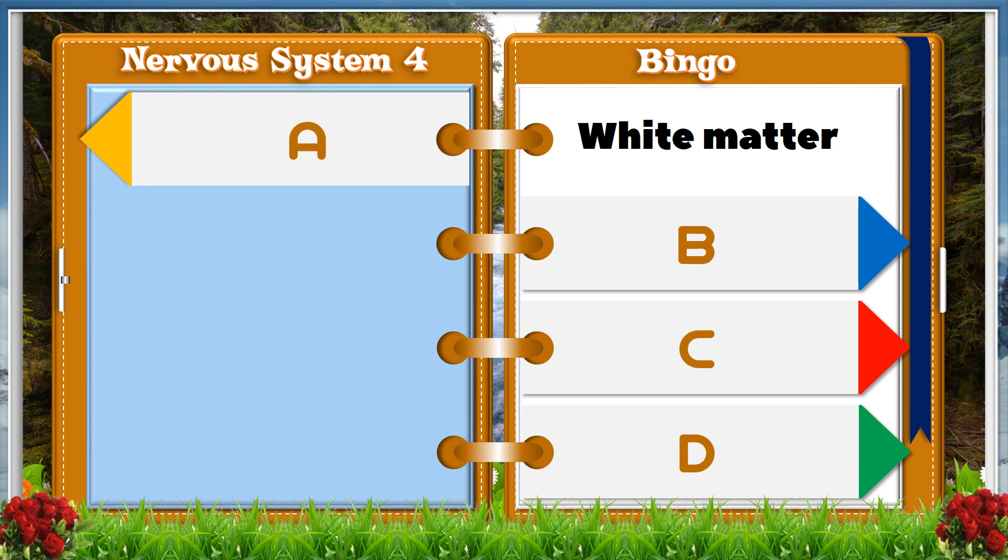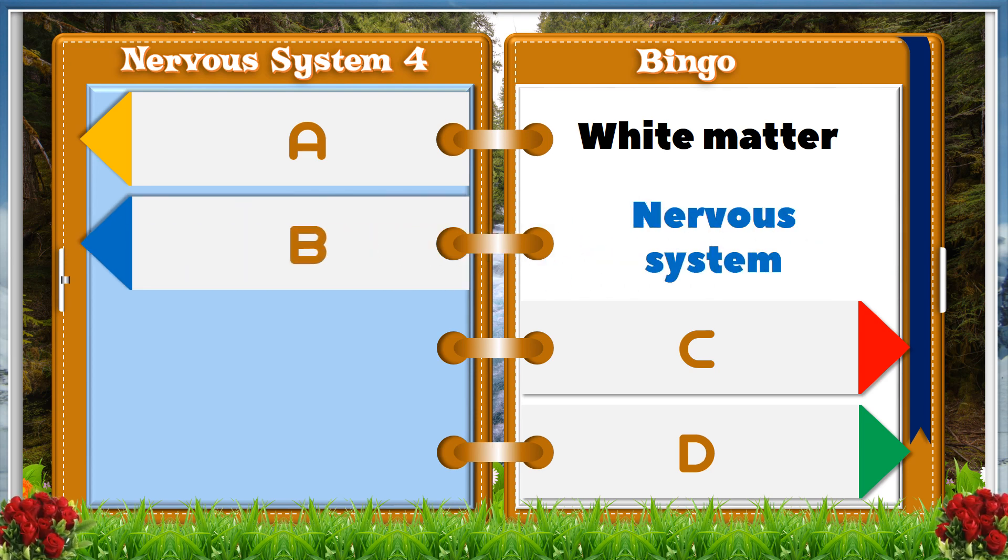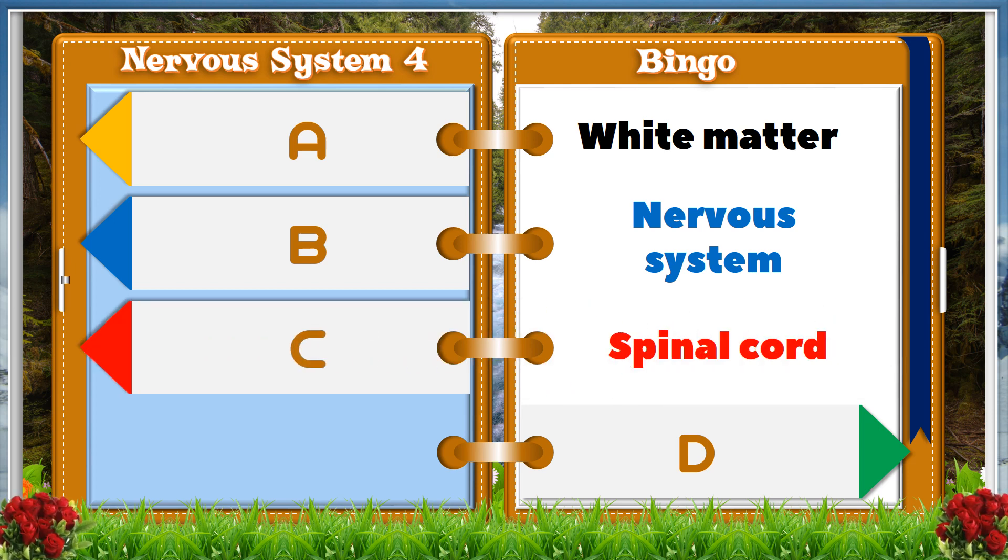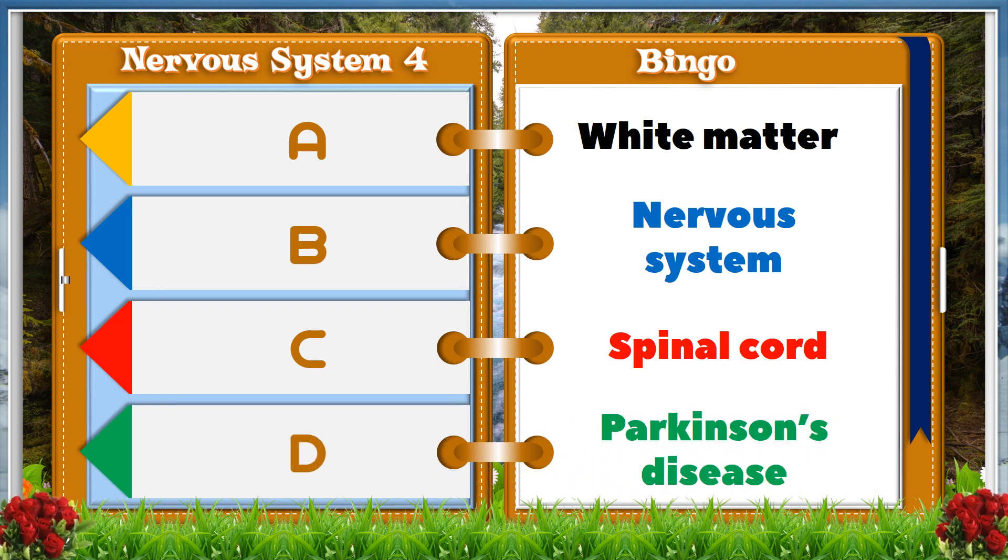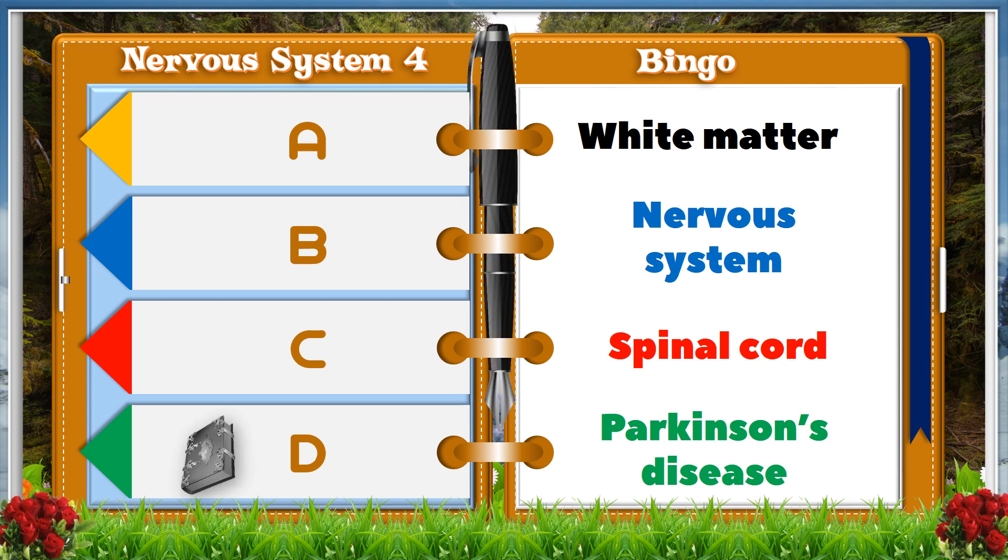A. White matter. B. Nervous system. C. Spinal cord. D. Parkinson's disease. And the answer is D. Parkinson's disease.